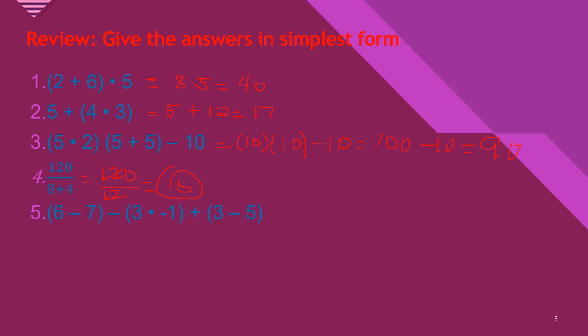So we have 6 - 7 is negative 1, then minus 3 × -1 is -3, and 3 - 5 is -2. Since negative times negative 3 is positive 3, minus 2. So we have -1 + -2 is -3, plus 3. The answer is 0.